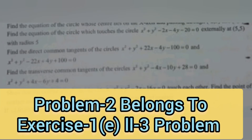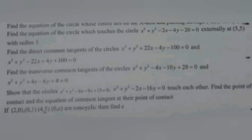This is a very very important repeated problem. The second problem is: find the direct common tangents of the circles x² + y² + 22x - 4y - 100 = 0 and x² + y² - 22x + 4y + 100 = 0. This is also a very very important repeated problem in IP examination, also known as the 100th problem of the direct common tangent.